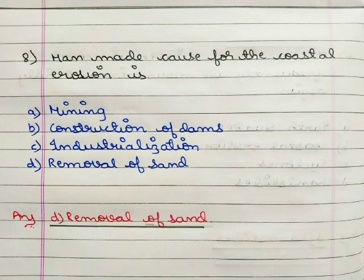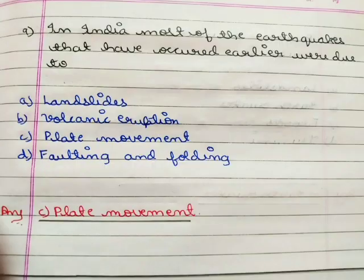Next question: a manmade cause of coastal erosion is option A mining, option B construction of dams, option C industrialization, option D removal of sand. The correct answer is option D removal of sand.